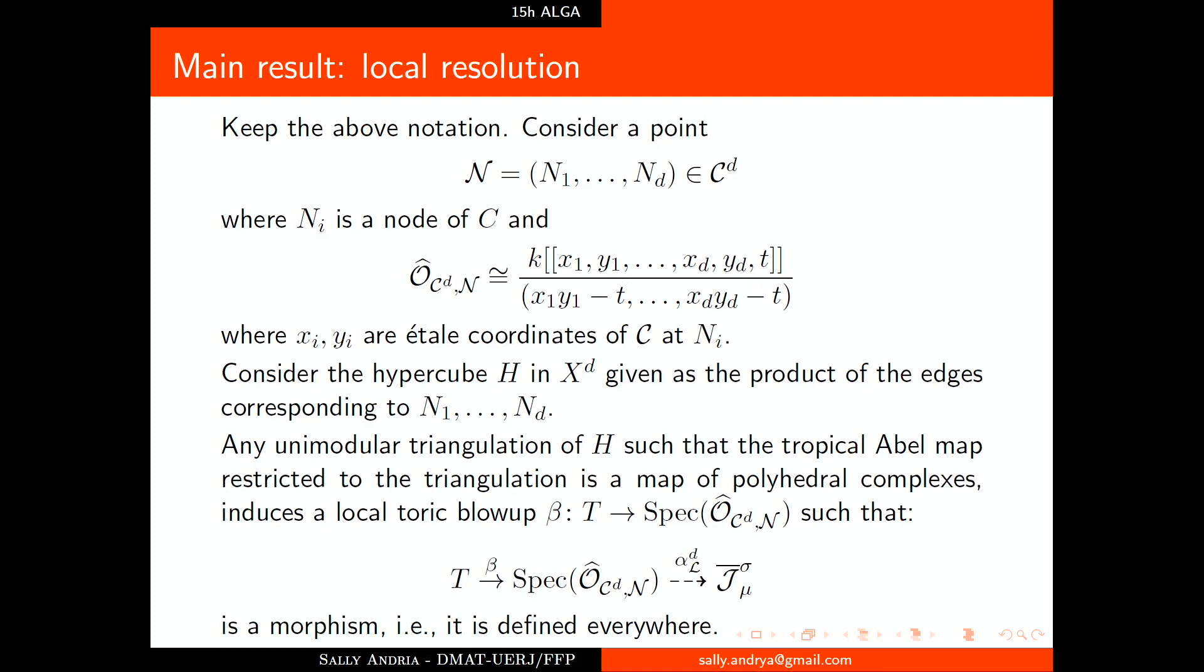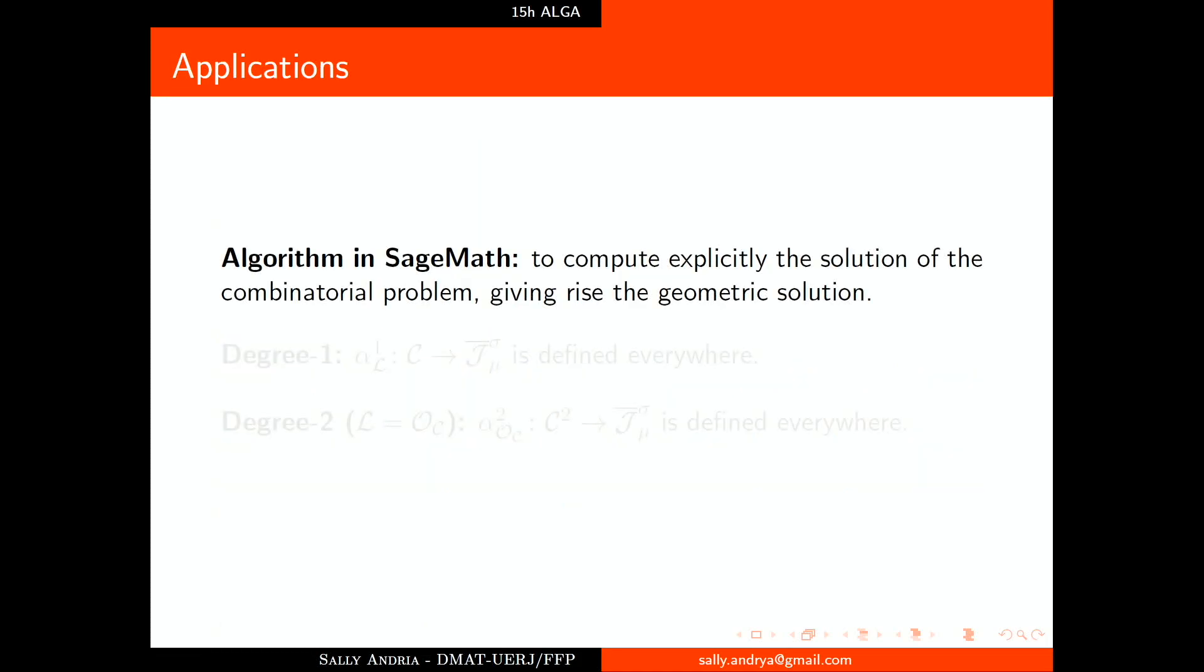And what we do with all this? We made an algorithm in SageMath to compute explicitly the solution of the combinatorial problem. We saw in the Federico session how Nester was really right when they proved that the degree 1 Abel map is defined everywhere. For degree 2 we know how to explode or what divisors we need to explode to solve this problem.